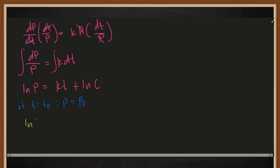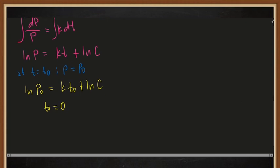Substituting gives us ln(p₀) = k·t₀ + ln(c). We assume t₀ = 0 because that is the starting time, so we have ln(p₀) = k·0 + ln(c). We can see that ln(c) = ln(p₀).